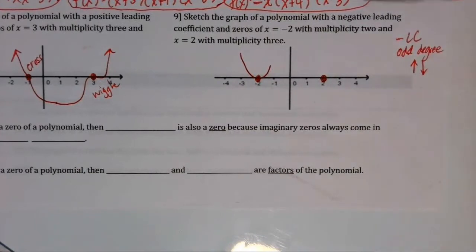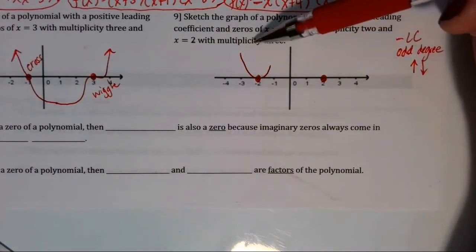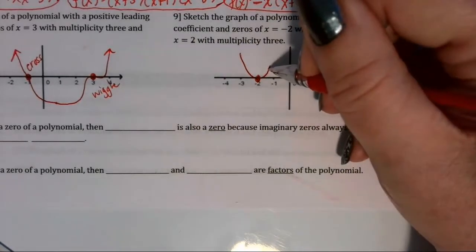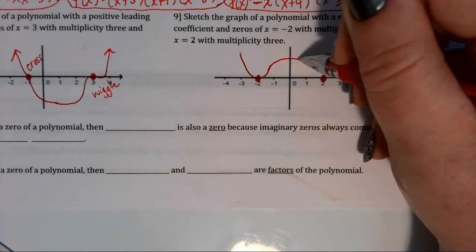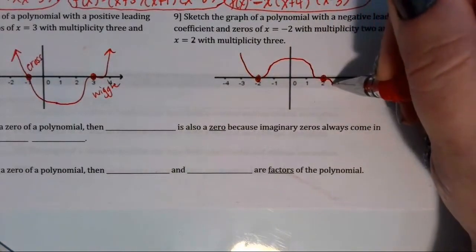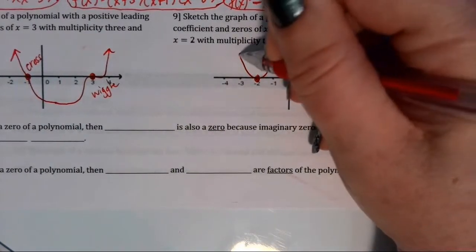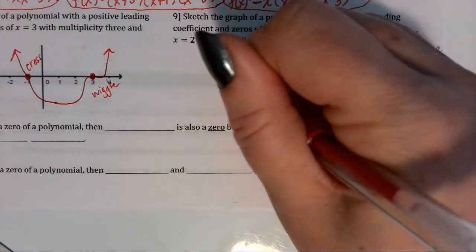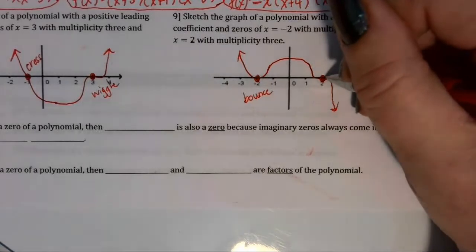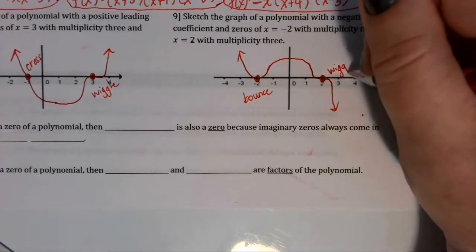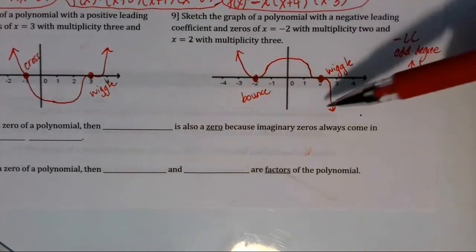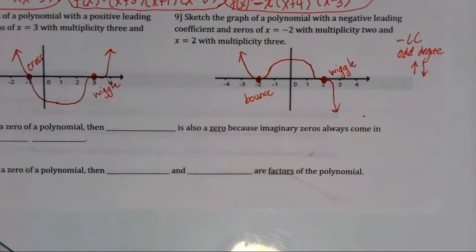Then x equals 2 has multiplicity of 3 and it has to end down on the right. So my polynomial has to turn, wiggle through the positive 2 and then head down to positive infinity. So at negative 2, I have a bounce and at positive 2, I have a wiggle and my end behavior starts up on the left and ends down on the right.